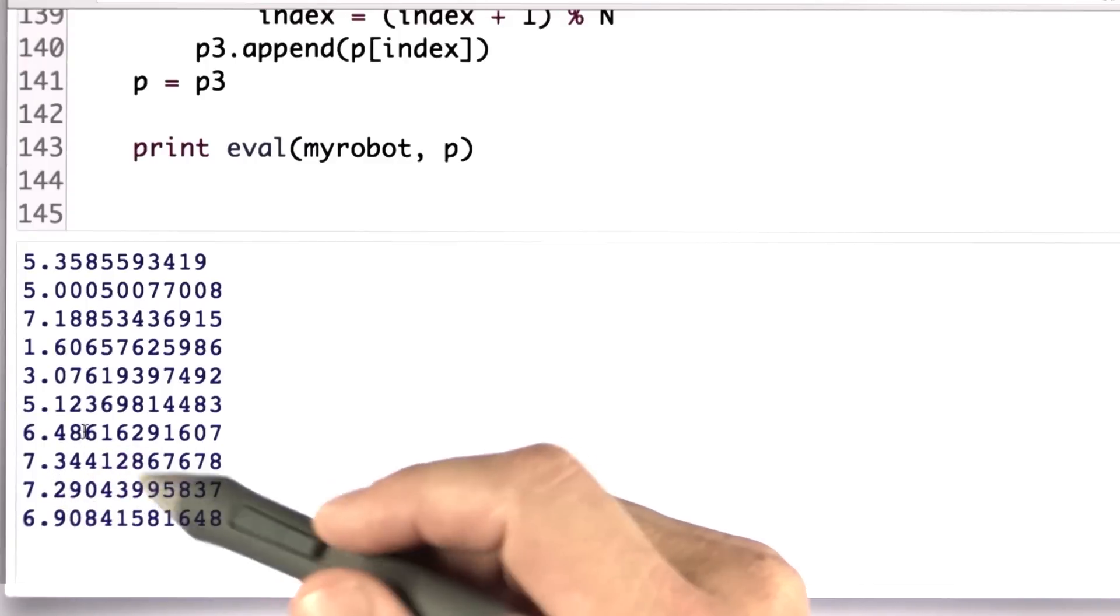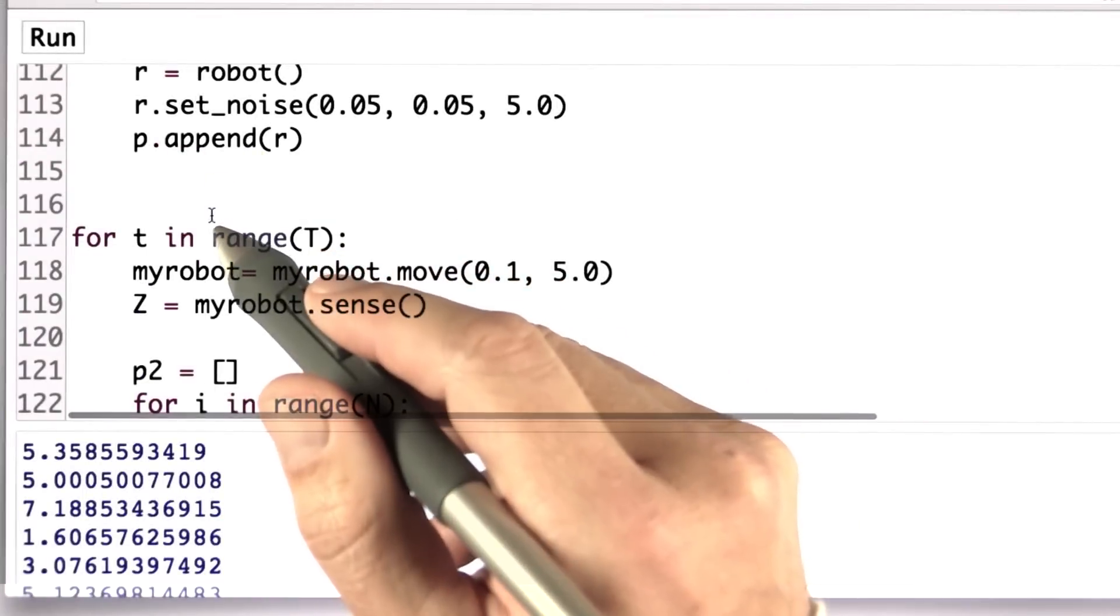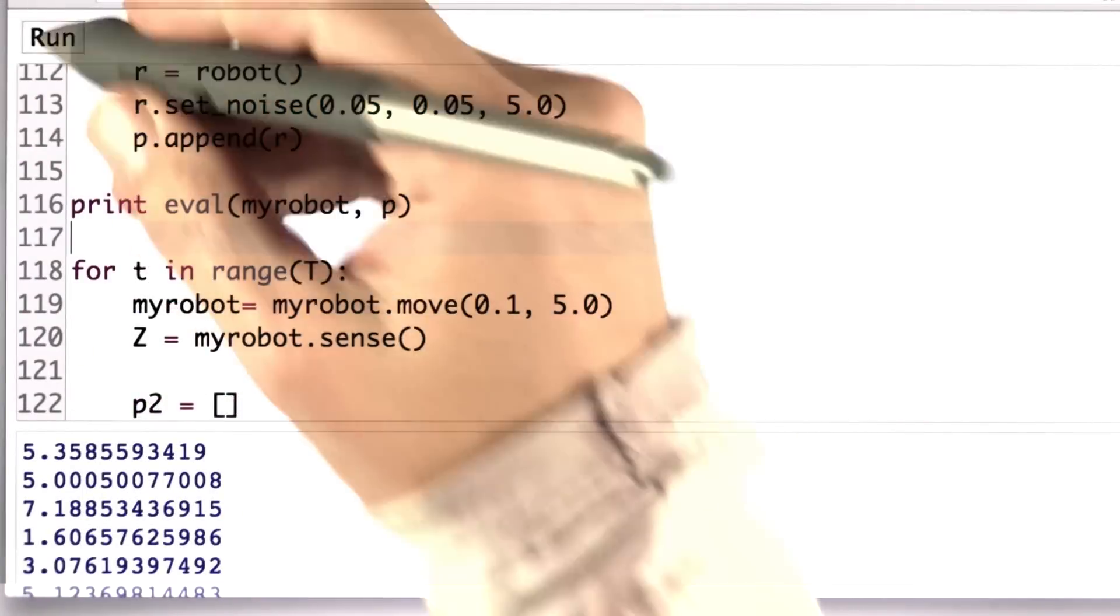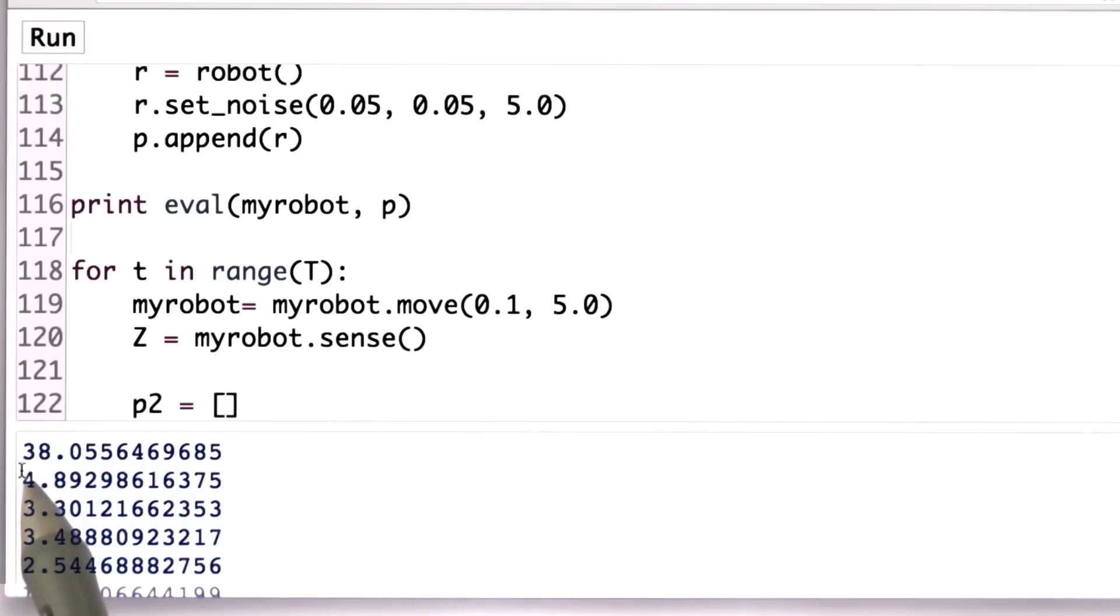In fact, to understand this, let me just take the print eval command and move it to the very beginning where we've done no particle filtering. So hit run. What you'll find is it goes from 38 to 4, 3, 3 in just one step of particle filtering, which is a drastic reduction of error.